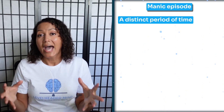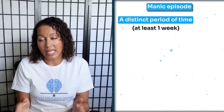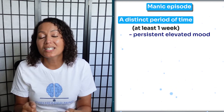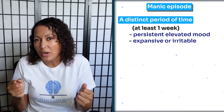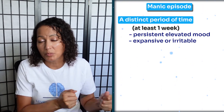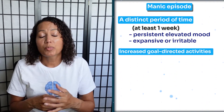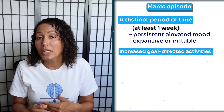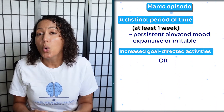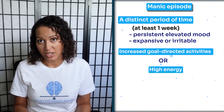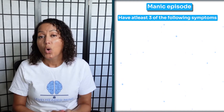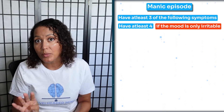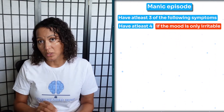A manic episode is a distinct period of time, at least one week in length, characterized by a persistent elevated mood that is expansive or very irritable. This person will also have increased goal-directed activities or high energy, and they must have at least three of the following symptoms — or at least four if the mood is only irritable.